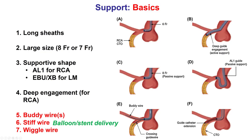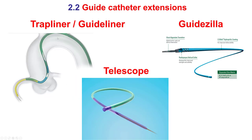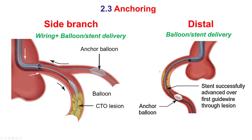How to approach such lesions? Complex lesions are important to be approached with strong guide catheter support. This can be obtained by using long sheaths or large size sheaths such as an 8 or 7 French, using supportive shape guide catheters such as AL1 for the right, deeply engaging the guide catheter, or using buddy wires. The second line is to use guide catheter extensions such as the GuideLiner, Trapliner, Godzilla, and Telescope, currently available in the U.S., or by using the side branch anchoring technique with a balloon inflated in a side branch proximal to the target lesion.